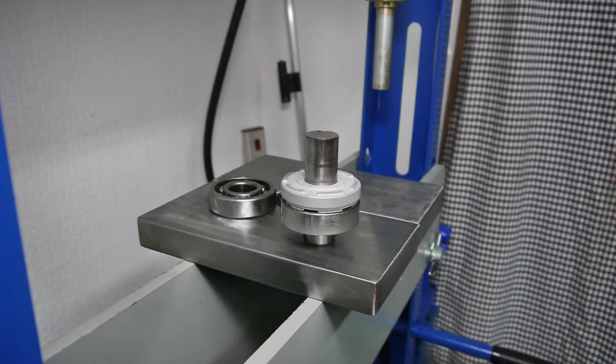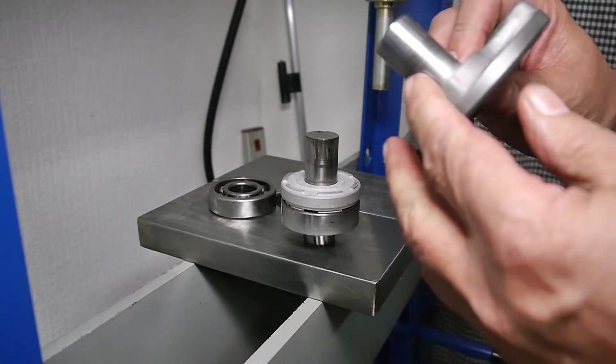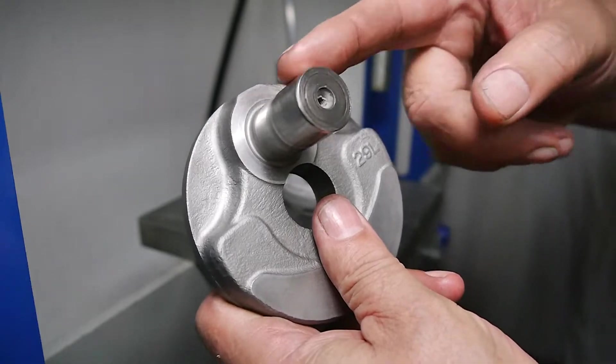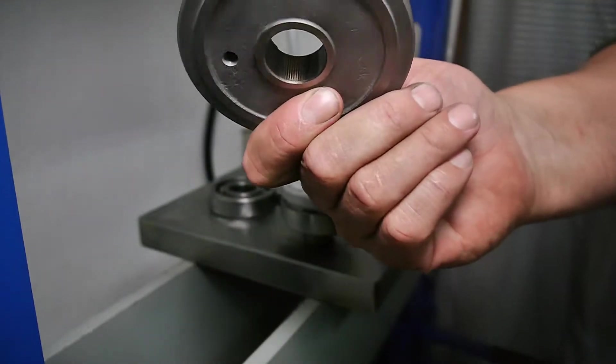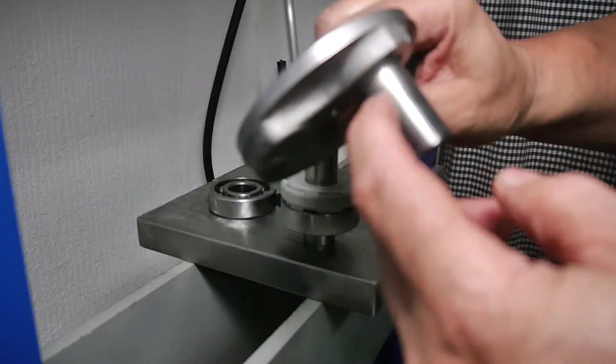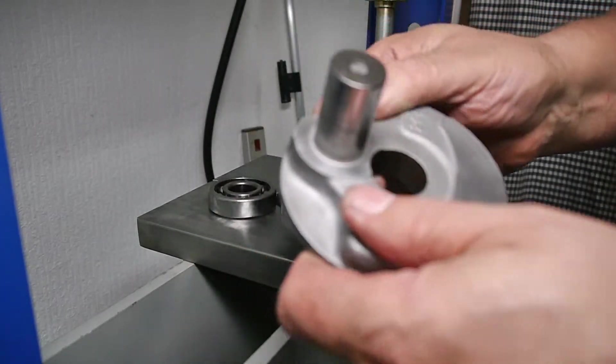On these Yamahas the big ends are quite worn as well, and on these LC's that crank pin, the big end pin, is part of that web so you have to buy the whole web. On the older machines this will press out as well, so you didn't have to buy so many parts.